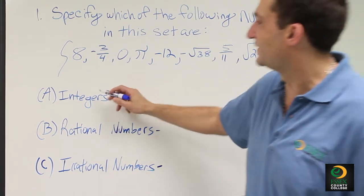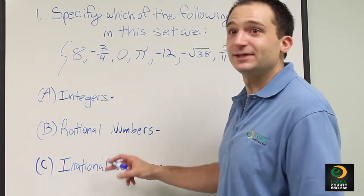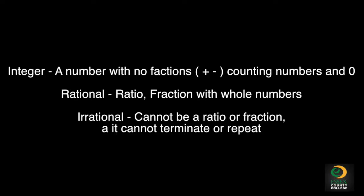To begin with, I'll define what integers, rational numbers, and irrational numbers are. Integers are negative or positive whole numbers, and also include 0.